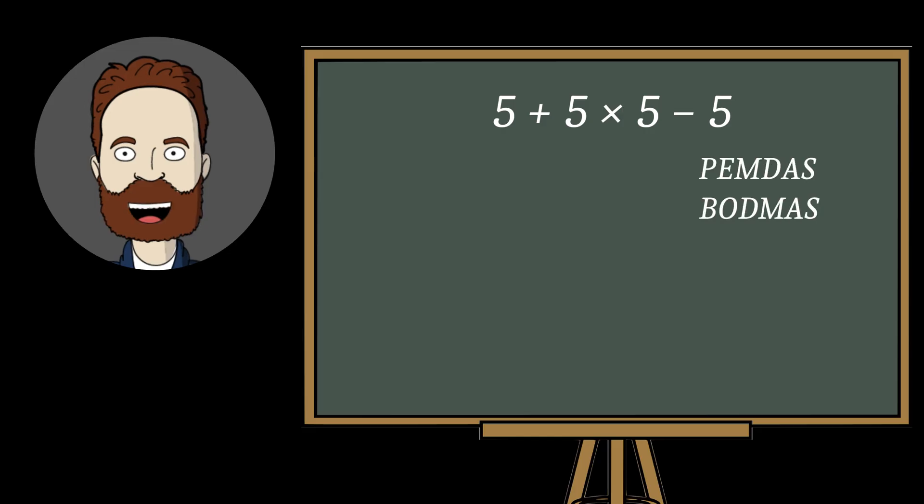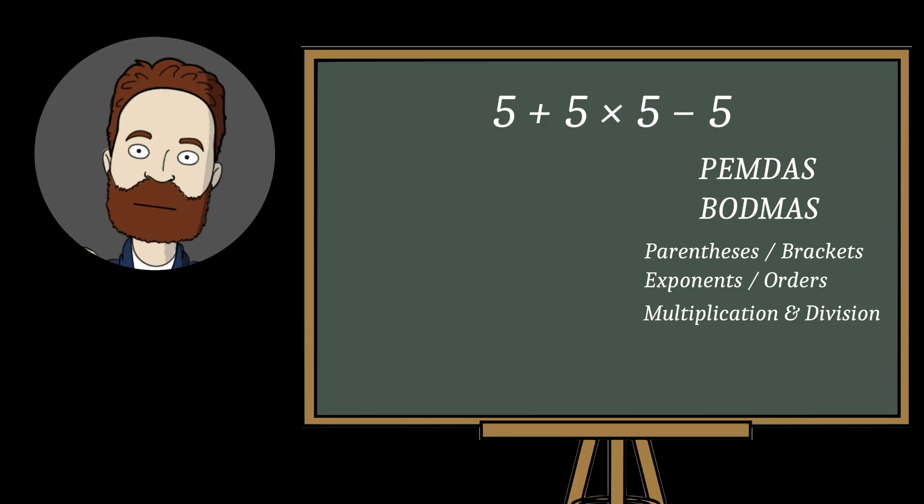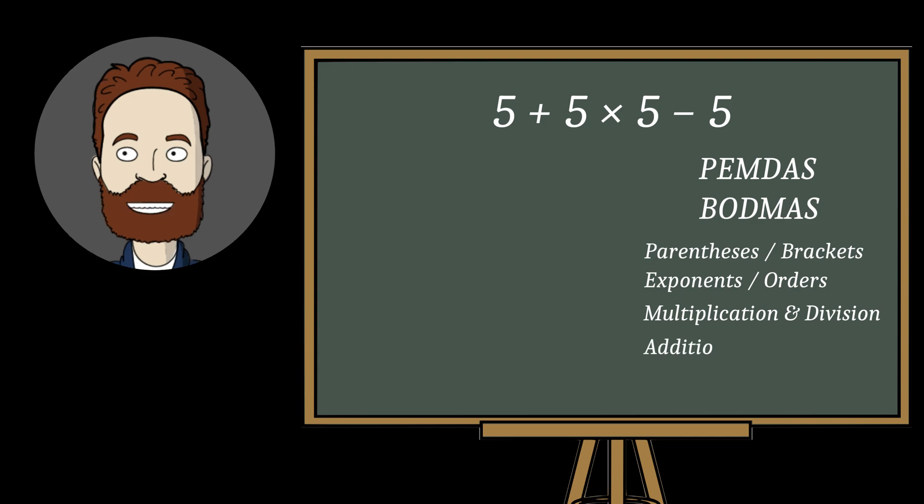First, we calculate what's in parentheses, then exponents. Then we perform multiplication and division, in the order they appear from left to right. After that, addition and subtraction also from left to right.